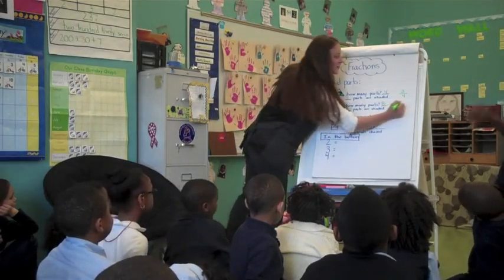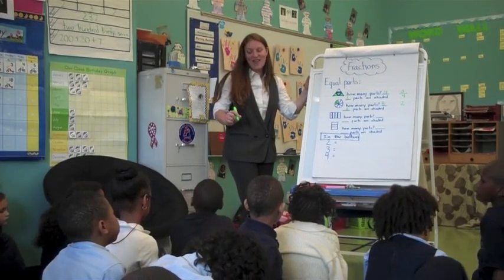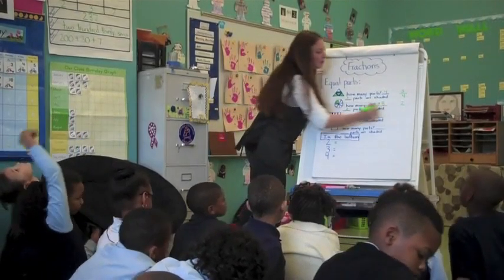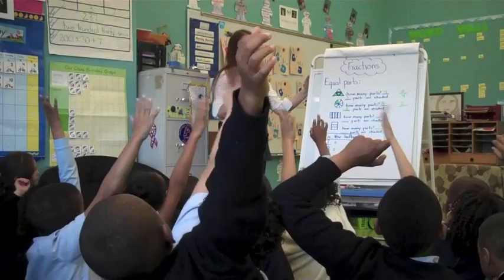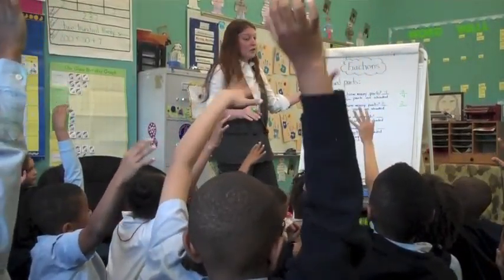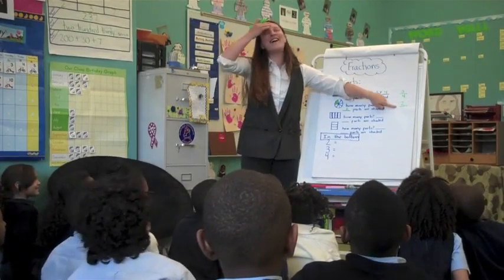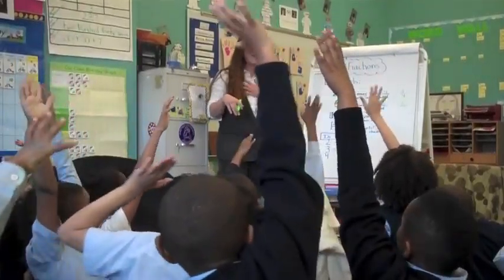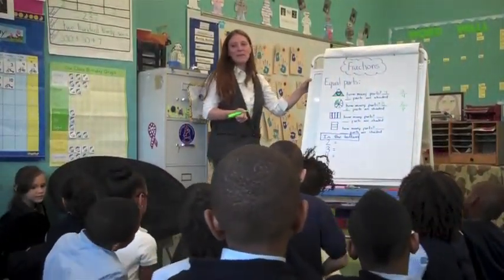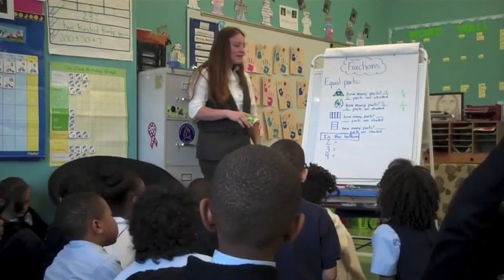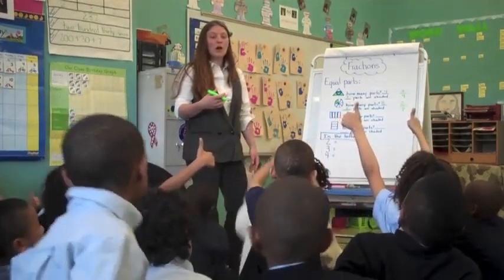Now it's time to write the fraction again. What number goes on top, Caitlin? Two. Why? Because you shaded only two, and the number of shaded parts goes on top. I drew that line again — everyone should be able to tell me what that line means. Ready? Two... out of. And what goes on the bottom? Samara? Eight. Why? Because you have eight parts. Excellent job. Show me two thumbs up if you think this is a piece of cake.